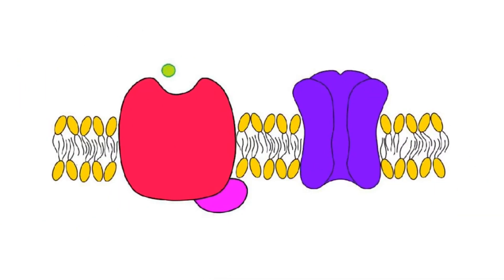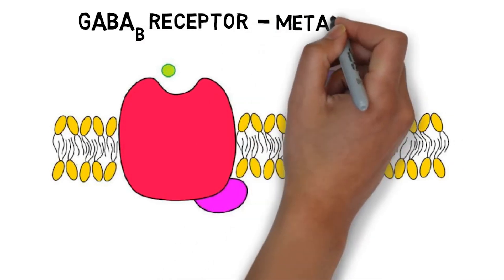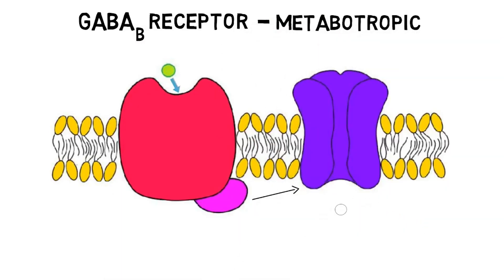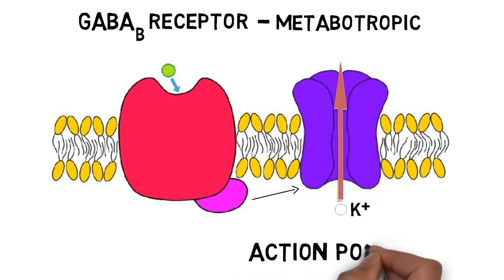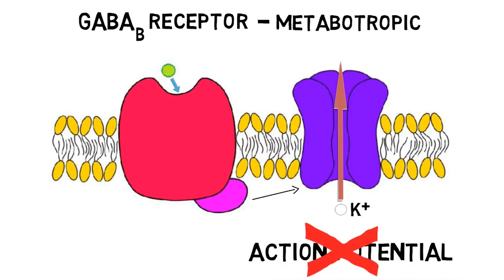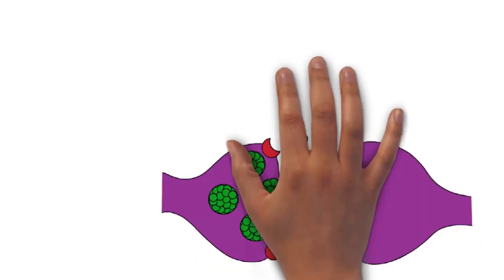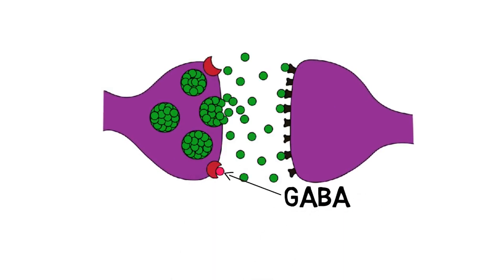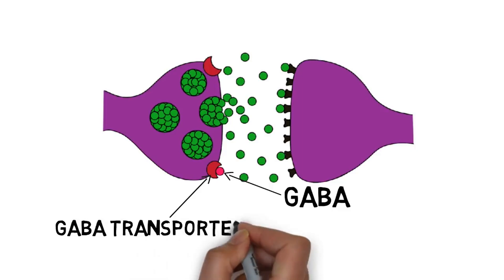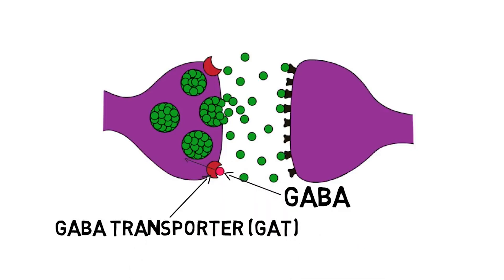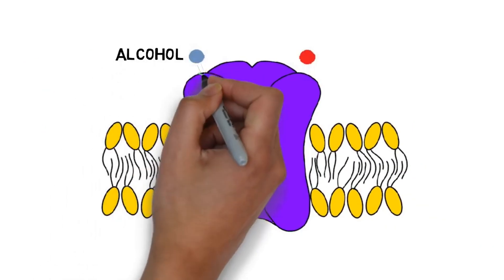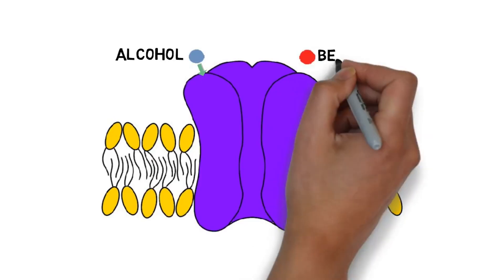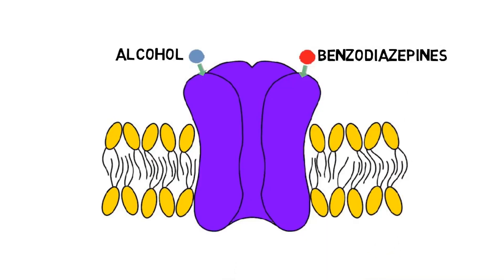GABA-B receptors are metabotropic, or G-protein-coupled receptors. When activated, they frequently cause the opening of potassium channels. These channels allow positively charged potassium ions to flow out of the neuron, again making the neuron hyperpolarized and less likely to fire an action potential. The actions of GABA are terminated by proteins called GABA transporters, which transport GABA from the synaptic cleft into neurons or glial cells, where it is degraded primarily by mitochondrial enzymes. Because GABA can reduce neural transmission, increased GABA activity can have sedative effects. Accordingly, a number of drugs that have such effects, like alcohol and benzodiazepines, increase activity at the GABA receptor.